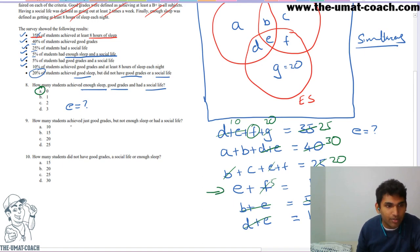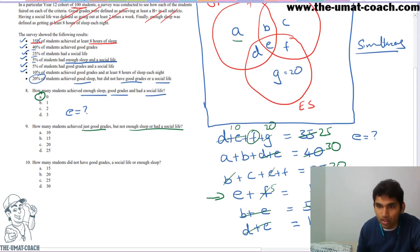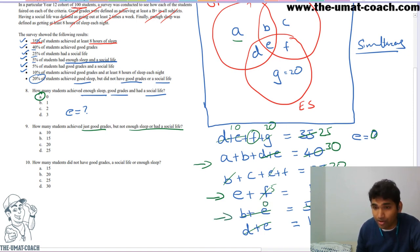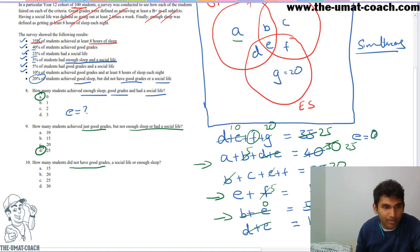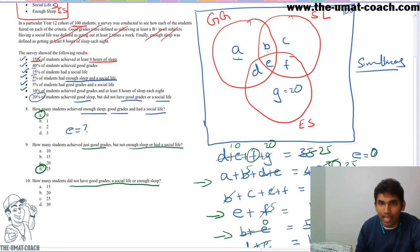How many students achieved just good grades but not enough sleep or social life? That's just region A. Since F = 5 and E = 0, from B + E = 5: B = 5. From A + B = 30: A = 25. For the final question — how many students achieved none of the three? Add up all regions: D + E + F + G = 35; A = 25; B = 5; and from C + F = 20 with F = 5: C = 15. Total inside = 25 + 5 + 15 + 35 = 80. Subtract from 100: 20 students had none of the three attributes.